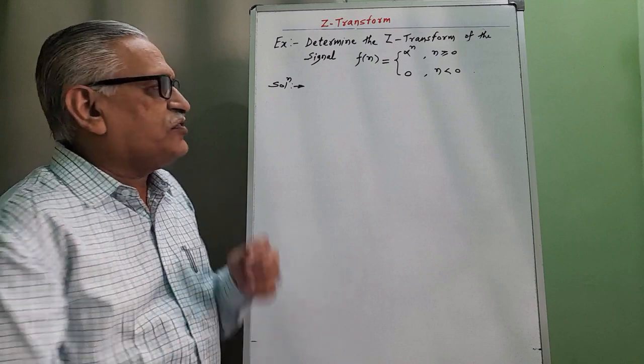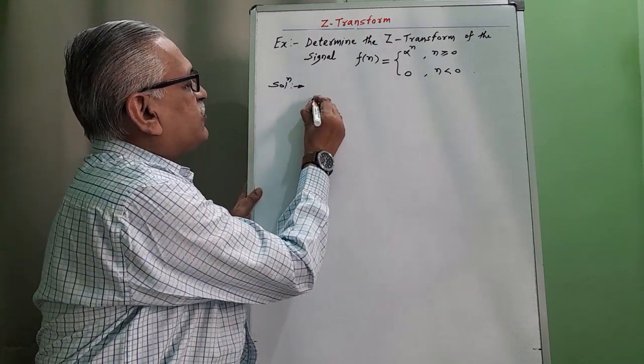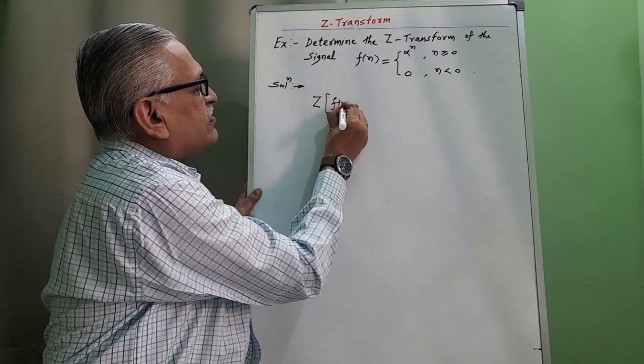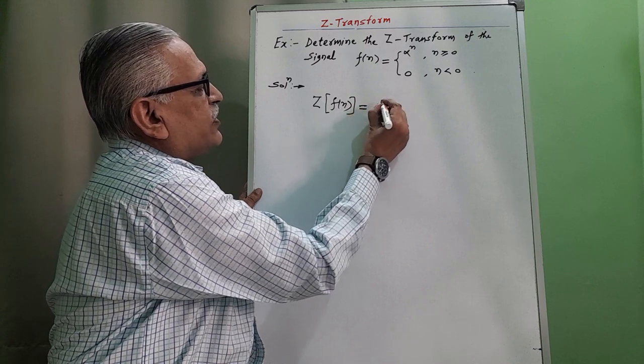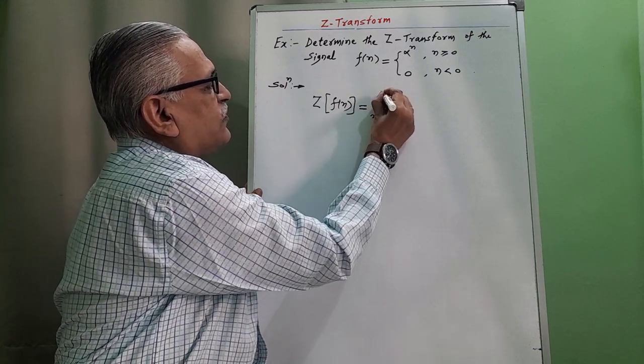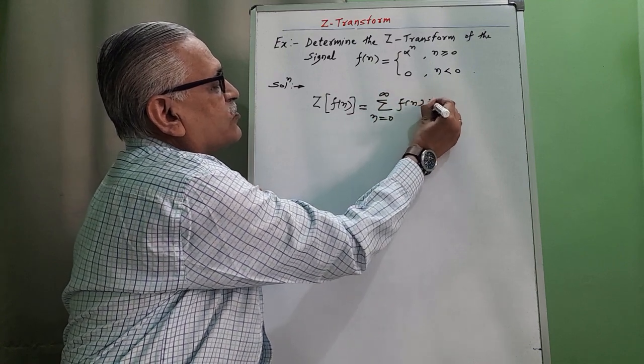As the value is 0 for negative values, Z-transform is given by Z[f(n)]. As I discussed in my previous video, it is summation from n equals 0 to infinity, f(n) times Z raised to minus n.